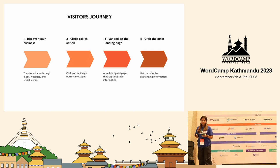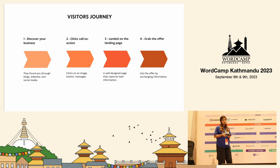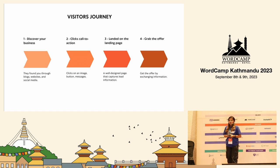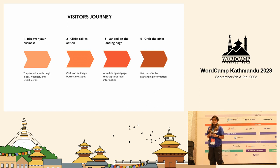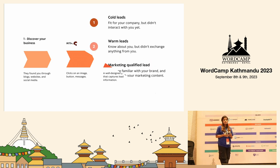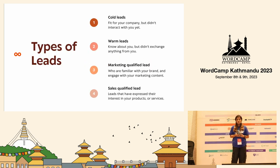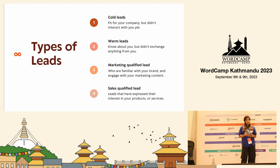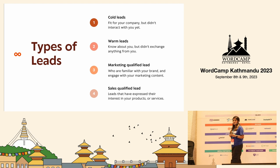They grab the offer, which could be buying anything or downloading anything from your website. Now, before generating leads, you need to know the types of your leads. There are four types of leads, basically: cold leads, warm leads, market-qualified leads, and sales-qualified leads.